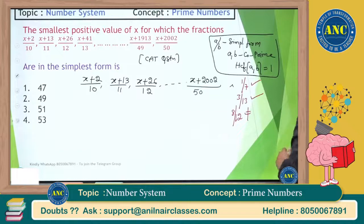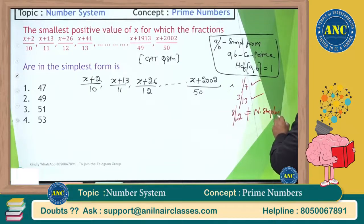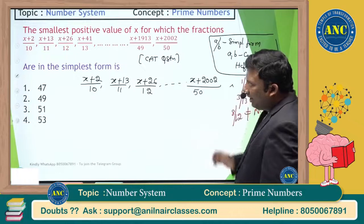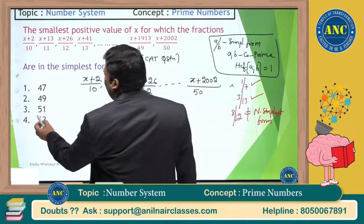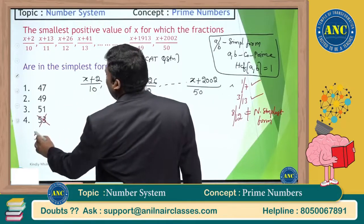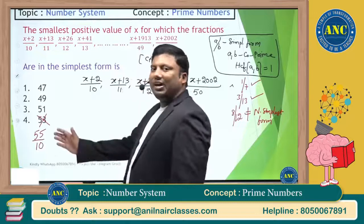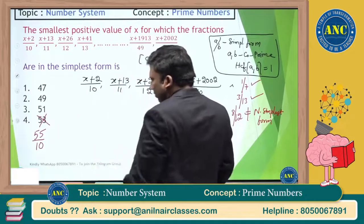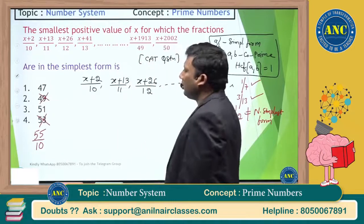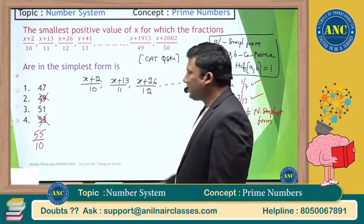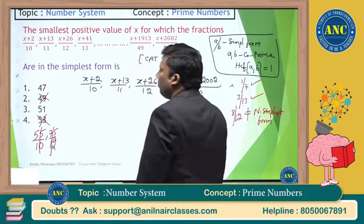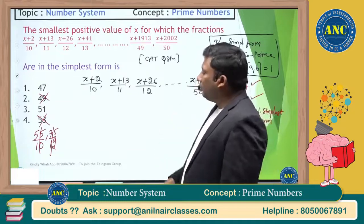For example, 1/7 is in simplest form, but 4/8 and 4/12 are not. We can eliminate answer options: if x ends such that x+2 is divisible by 5, then (x+2)/10 is not in simplest form — eliminating options 2 and 4. Also checking option 2: 49+26=75 divided by 12 is not in simplest form.